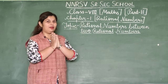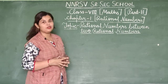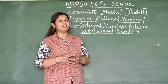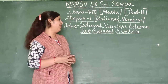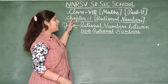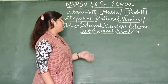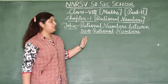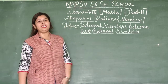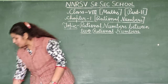Namaste students! I am Nattin and today we are going to start Part 11 of Chapter Number 1. This is the last part of this chapter and the topic is rational numbers between two rational numbers.